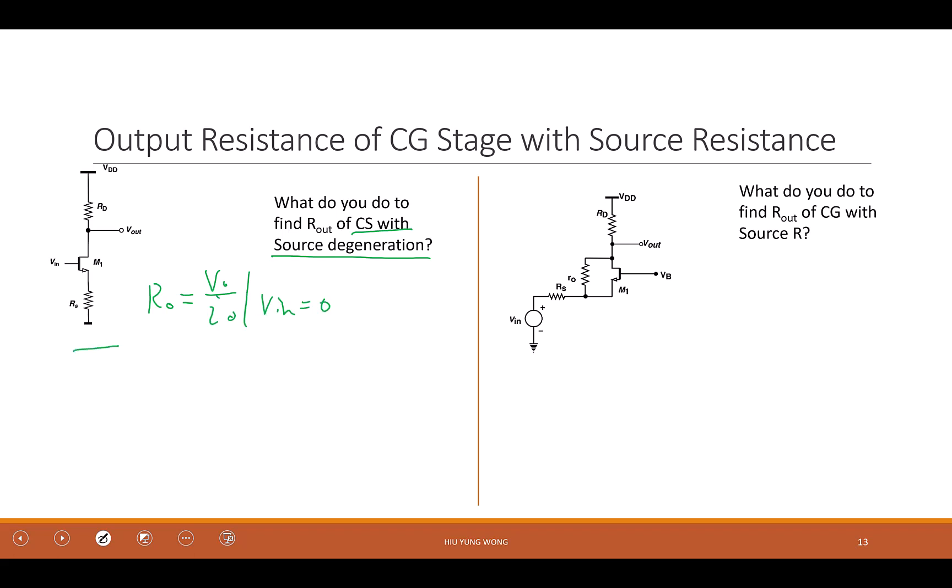So because of this, I'm going to draw the circuit like this. V out, I out, R s. Is this drawing okay? I need to ground the input and then I find V out divided by I out. But we know the answer already. We solved the small signal circuit. We know this is R zero times one plus GM, R s plus R s. Done.